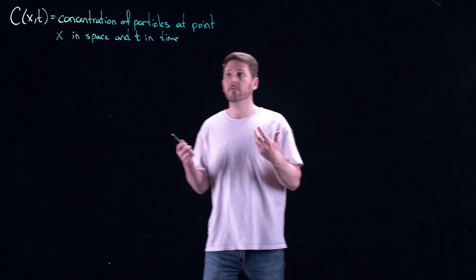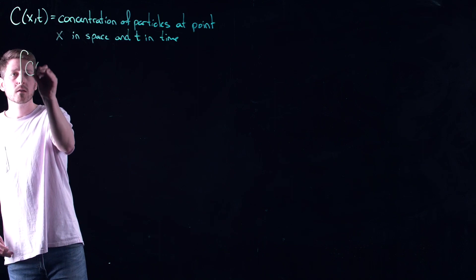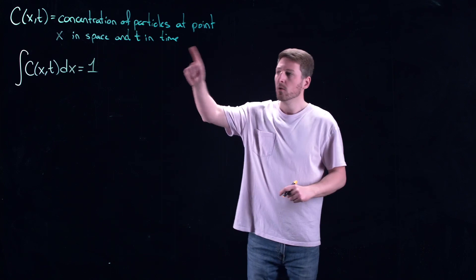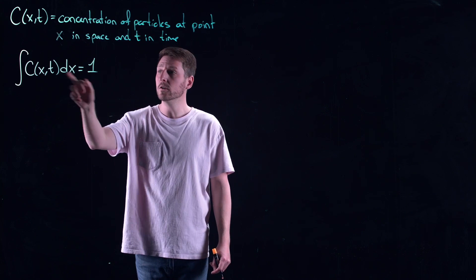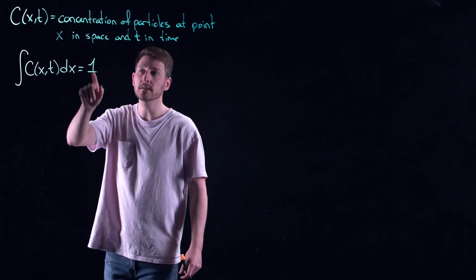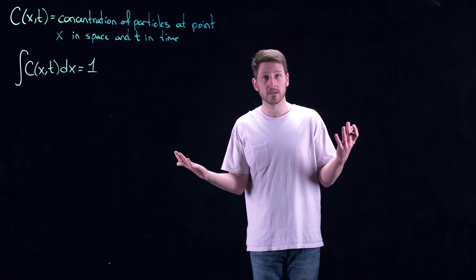We'll make the assumption that if you sum up the concentration of particles everywhere in space, it's always equal to one. This is a conservation law — it means you're accounting for all particles at every point in time. Nobody disappears, nobody randomly comes into existence. If you look over all of space, everyone is accounted for. This means 100% of the particles are somewhere in space.